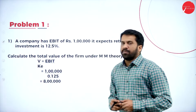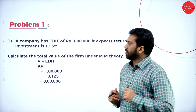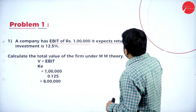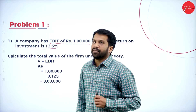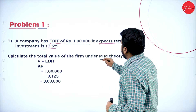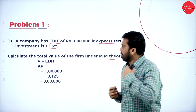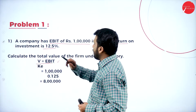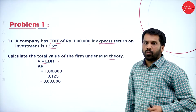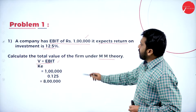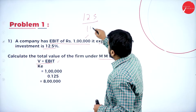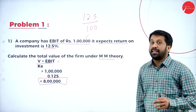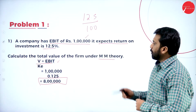Problem number 1 — a simple 5-mark question. A company has EBIT of rupees 1 lakh and expects a return on investment of 12.5%. Calculate the total value of the firm under the MM approach. Value = EBIT divided by cost of equity = 1,00,000 divided by 0.125. Your final answer is 8 lakh.